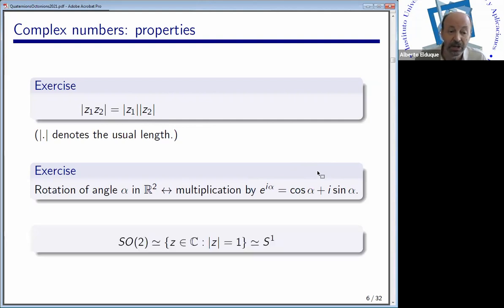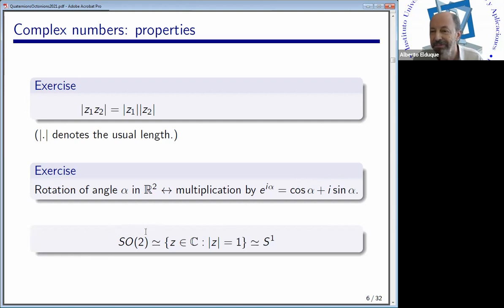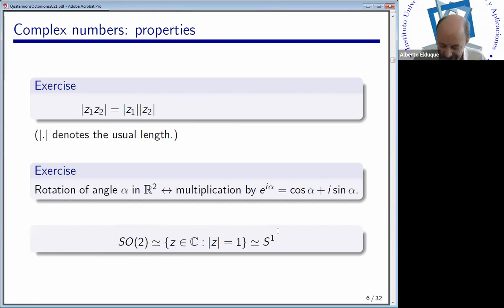Whenever we multiply by this complex number the length is one, so the length is invariant and we get an isometry of the Euclidean plane. This isometry is just the rotation of angle alpha. So we can identify the special orthogonal group of the Euclidean plane with the unit circle in the Euclidean plane. This is well known, so I will not insist on that. Let's move to quaternions.